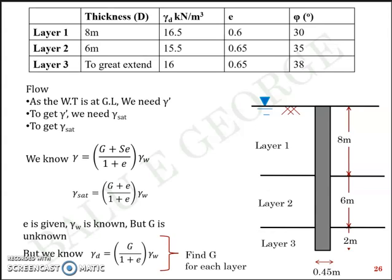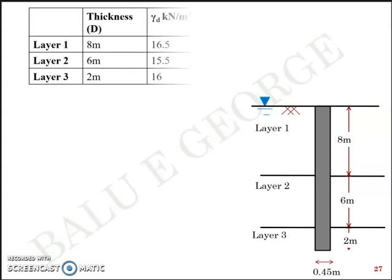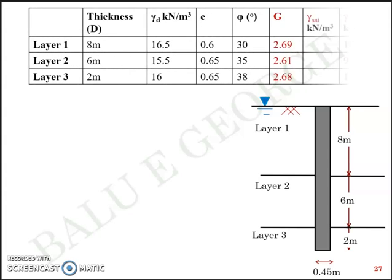From gamma d and void ratio you arrive at G. From G and void ratio you arrive at gamma saturated. And from gamma saturated you subtract gamma w and you get gamma dash. This is everything that has to do with geotechnical engineering one in your KTU syllabus. I have represented that in a tabular form. You can cross check the answers: G, gamma saturated and gamma dash.